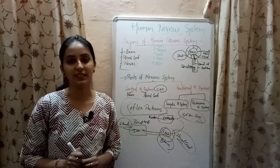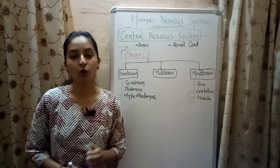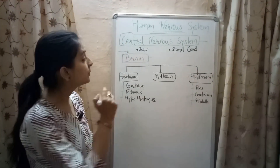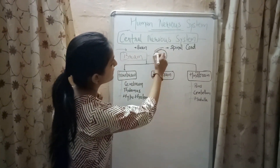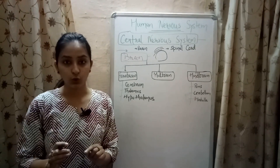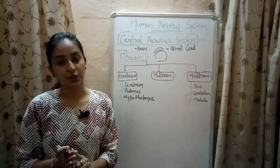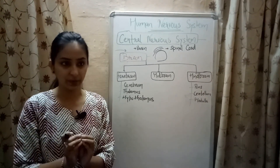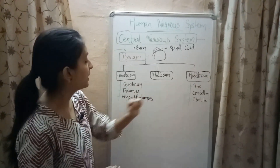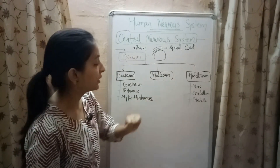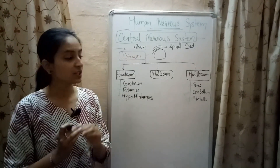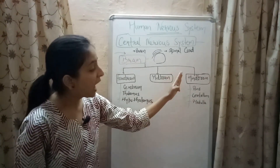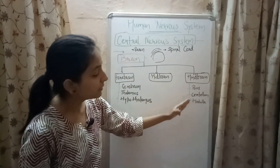Now let's study the central nervous system in detail. Brain is located inside the skull and is covered with three membranes known as meninges — dura mater, pia mater, and arachnoid. The brain is divided into three parts: forebrain, midbrain, and hindbrain. Forebrain is further divided into cerebrum, thalamus, and hypothalamus. Midbrain does not have any divisions. Hindbrain is divided into pons, cerebellum, and medulla.